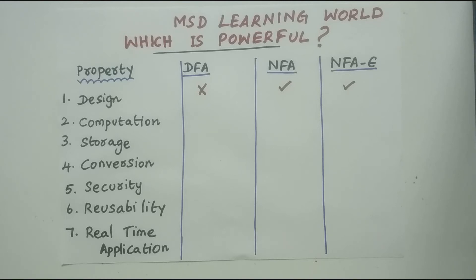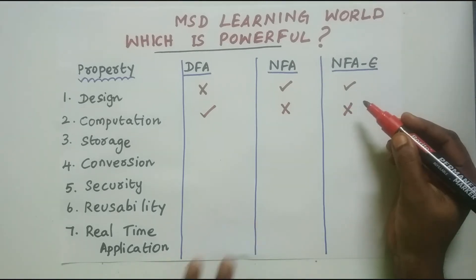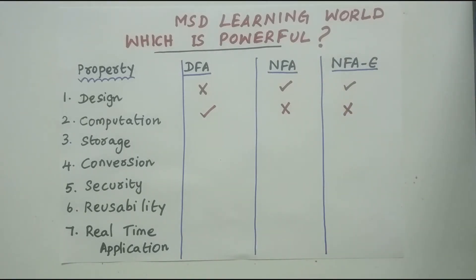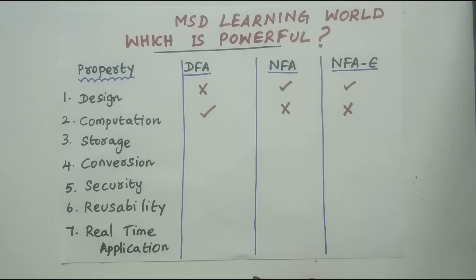From the computation point of view, the deterministic finite automata is more powerful than NFA and NFA-epsilon, because NFA and NFA-epsilon machines will have more states. At runtime, the machine will have more transitions dynamically, and during execution the non-deterministic machines will be performing thread executions, making computation a very tedious process. As the number of states, transitions, and epsilon transitions are more in NFA and NFA-epsilon, DFA is more powerful computationally.